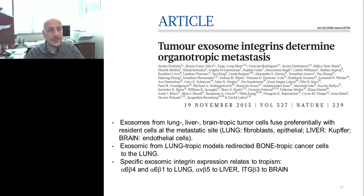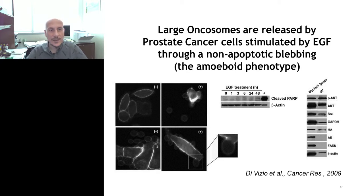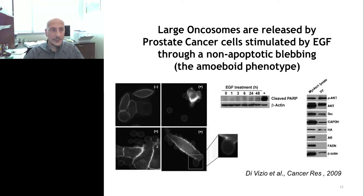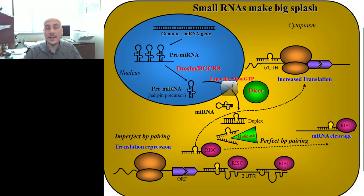Dolores Divizio and colleagues at Cedars-Sinai provided a broad definition of the role of large oncosomes — vesicles ranging from 1 to 10 microns — showing that highly metastatic prostate cancer cells tend to release large oncosomes that contribute significantly to the metastatic process. Now I want to focus more specifically on microRNAs, the other main character in this story.